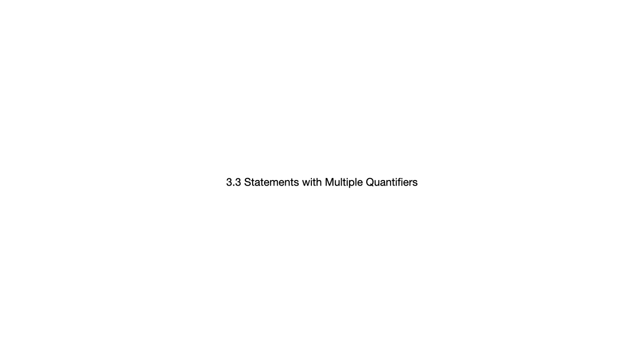Let's have a look at section 3.3, which is about statements with multiple quantifiers. In the first two sections of chapter 3, we talked about quantifiers — the universal quantifier, the existential quantifier — and also negations associated with quantified statements. But here, for the first time, we'll be looking at statements that have more than one of those quantifiers.